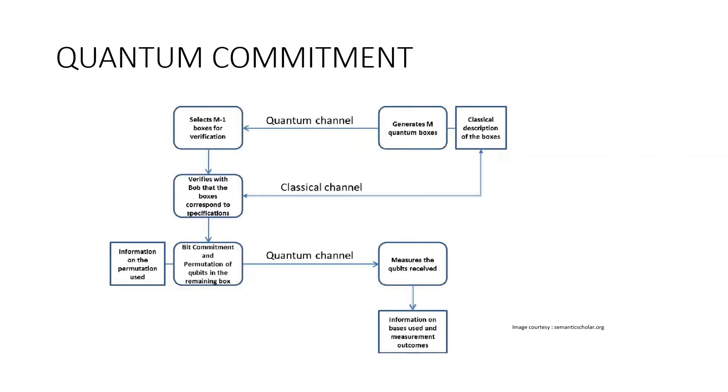Another application is quantum commitment. In addition to quantum coin flipping, quantum commitment protocols are implemented when distrustful parties are involved. A commitment scheme allows a party, Alice, to fix a certain value to commit in such a way that Alice cannot change that value while at the same time ensuring that the recipient Bob cannot learn anything about the value until Alice reveals it.